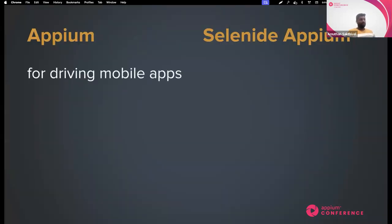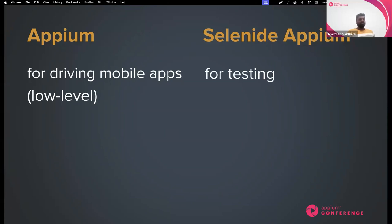APM is very good for driving your mobile apps - it's a low-level tool, it's not a testing tool. But Selenite APM is for testing. It comes with inbuilt assertions where you could write assertions in a much easier way. In APM you have to rely on JUnit, TestNG, or AssertJ for writing assertions, but those are not user-centric. With Selenite APM, this is very high level and very useful for writing APM tests.